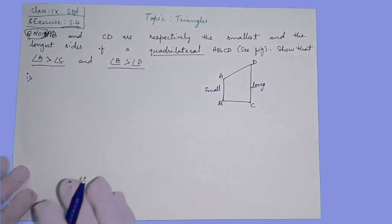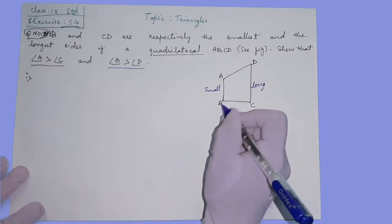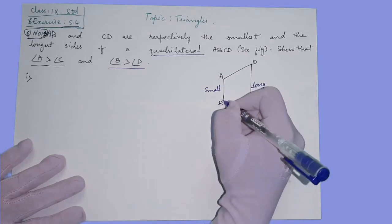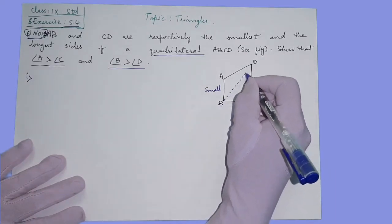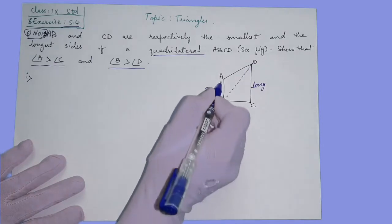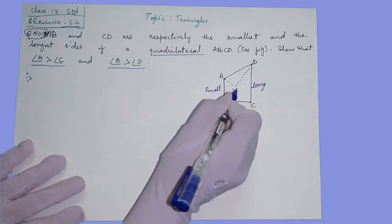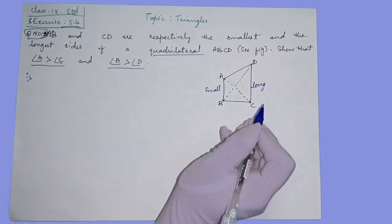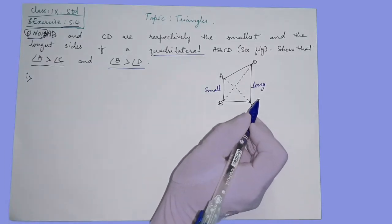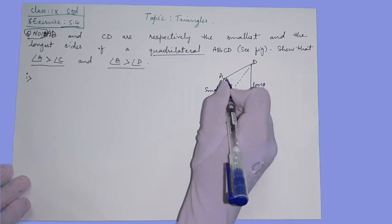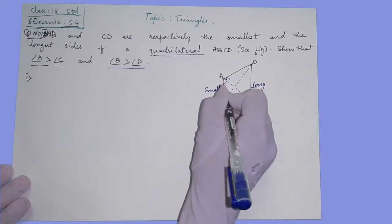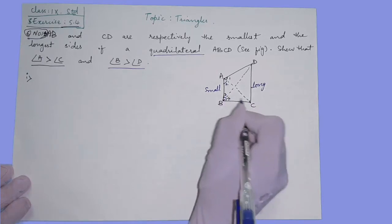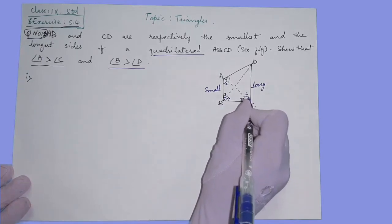First, we make the diagonal by joining it to the opposite vertex. BD is one diagonal and AC is the other diagonal. Now when we are taking the diagonals, we can name the angles. This angle is angle 1, angle 2, angle 3, angle 4, angle 5, angle 6.